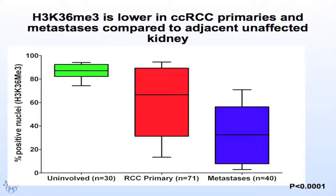Using computer analysis to quantitate histone 3-lysine 36 trimethylation, you can look at percent positive nuclei — the ratio of brown DAB-stained nuclei to purple counterstained nuclei. For patients with uninvolved kidney, primary tumor, and matched metastases, box and whisker plots show a general decrease in H3K36me3 going from uninvolved kidney to primary tumors to metastases, suggesting a clonal population in metastases with this unique decreased H3K36me3 phenotype.